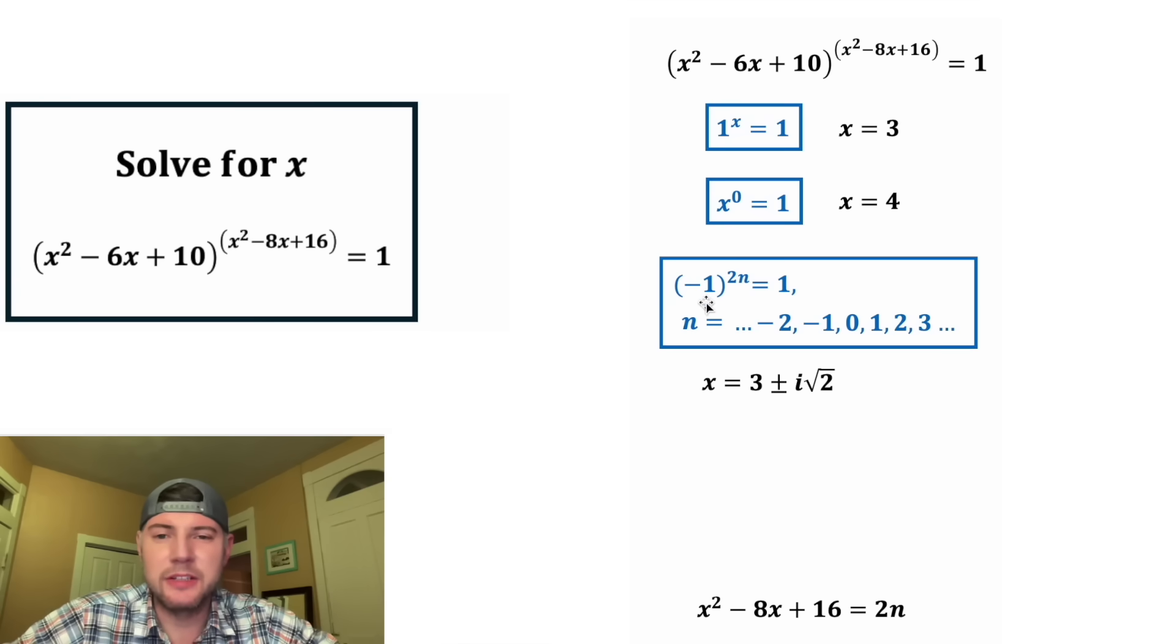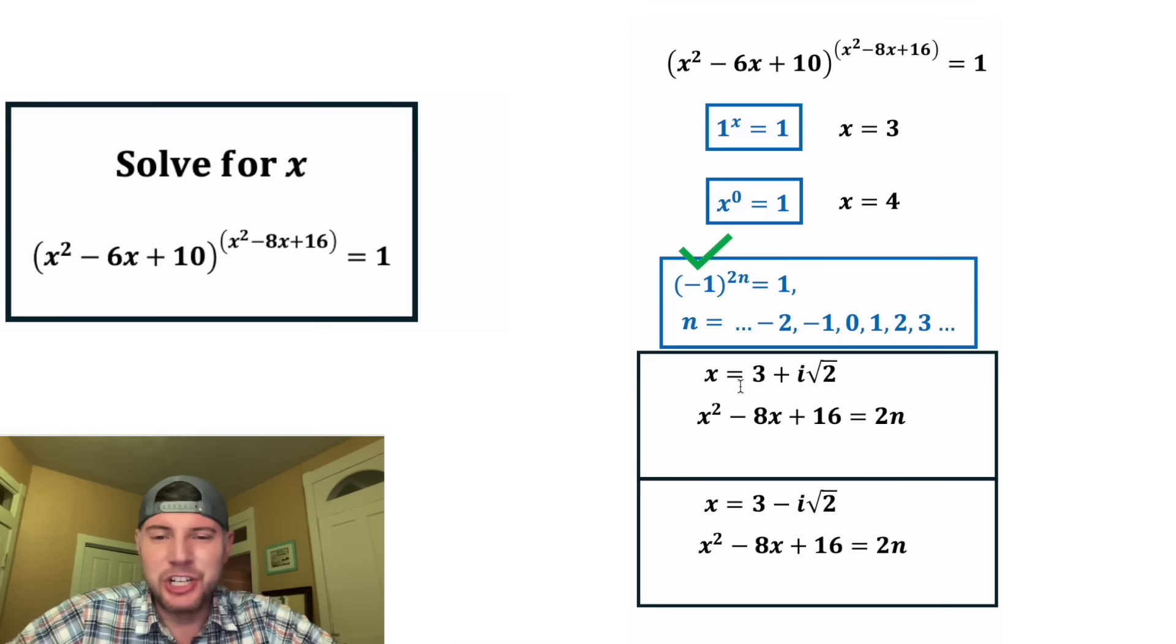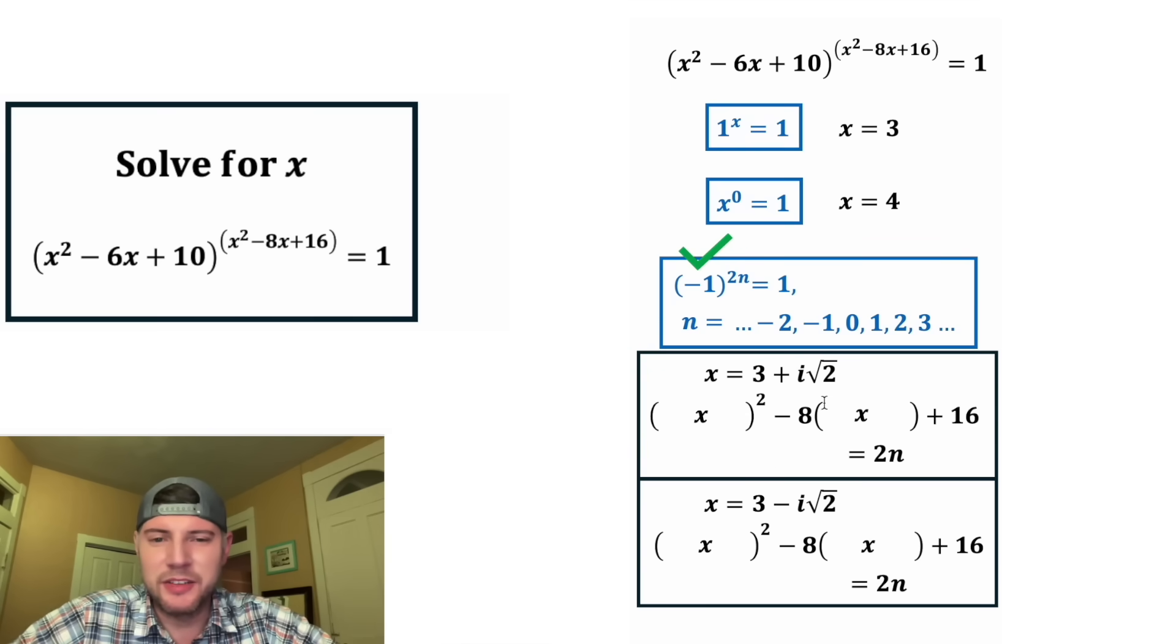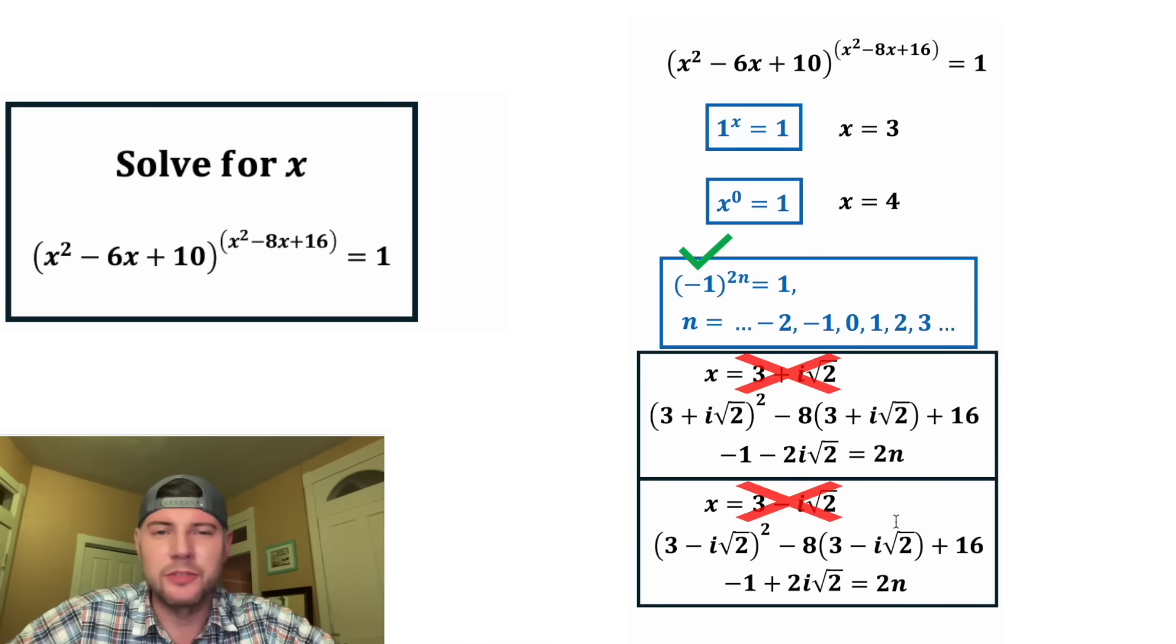So this value of x will give us a base of negative 1. Now we've got to see if this value of x will give us an exponent that's even. So first, this means two different numbers. There's the plus version, and there's the minus version. Let's check each of these. So we're checking if we plug this in. Will this give us an even value? So for the first one in the place of these x's, let's plug in 3 plus i root 2. And for the bottom one in the place of these x's, we'll plug in 3 minus i root 2. This simplified is negative 1 minus 2i root 2. And this one simplified is negative 1 plus 2i root 2. Neither one of these are an even number, so these two solutions won't work.